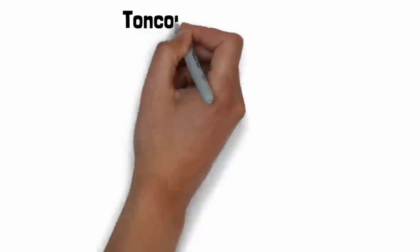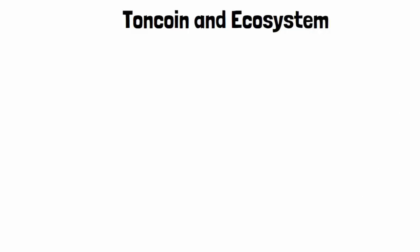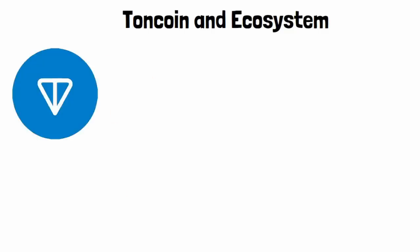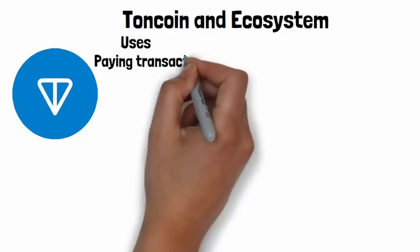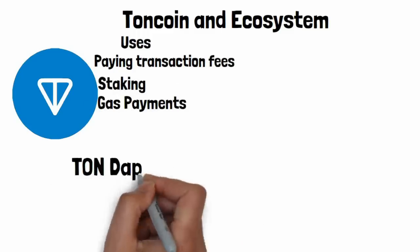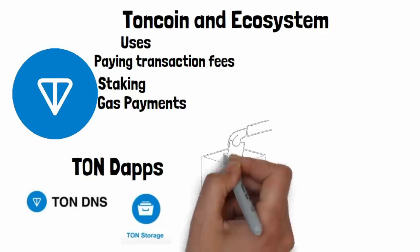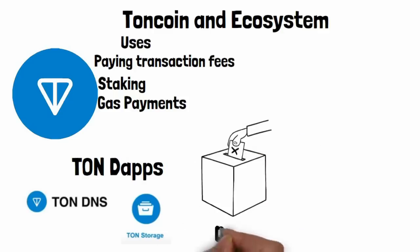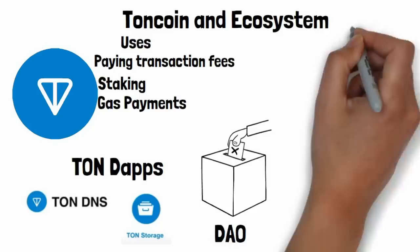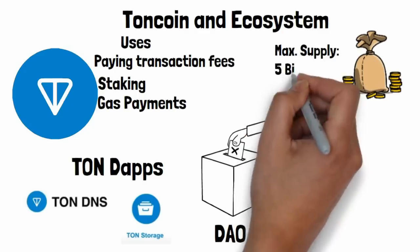Now let's talk about TON Coin, the native currency of the Open Network. TON Coin is used for various functions like paying transaction fees, staking, and gas payments. It's also integral to TON's decentralized applications such as TON DNS and TON Storage. TON Coin holders even have voting rights, making TON a DAO — a decentralized autonomous organization.